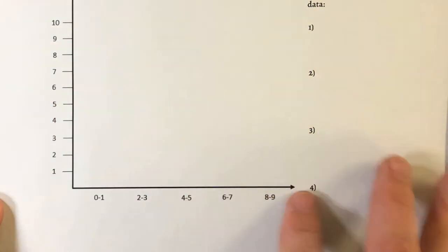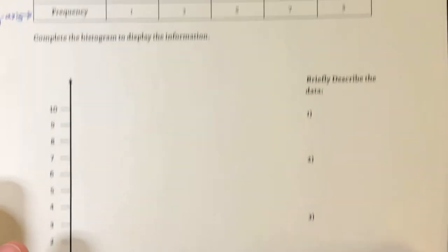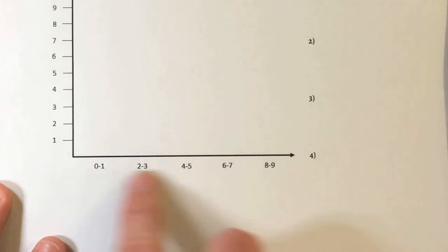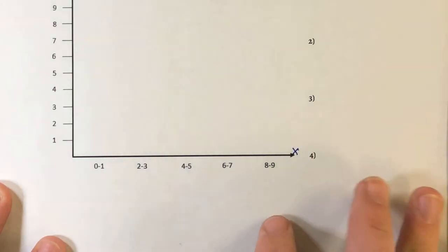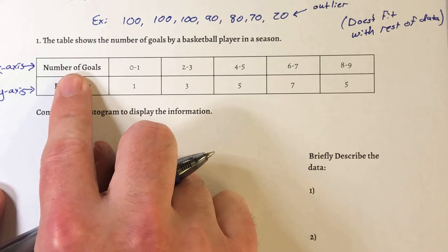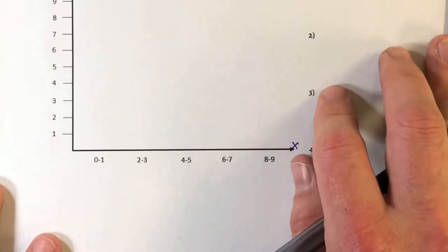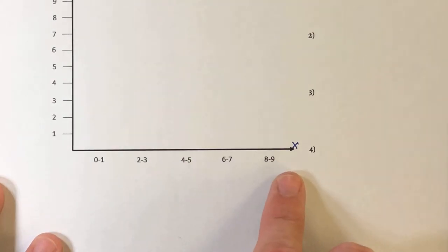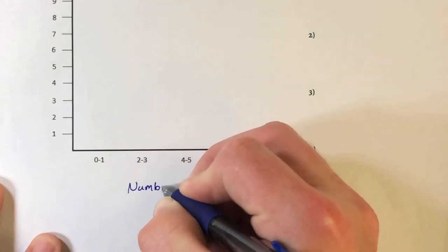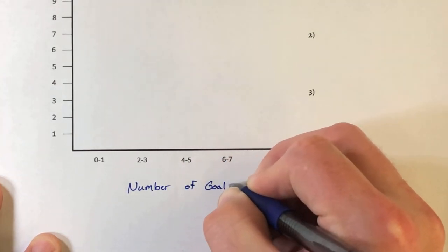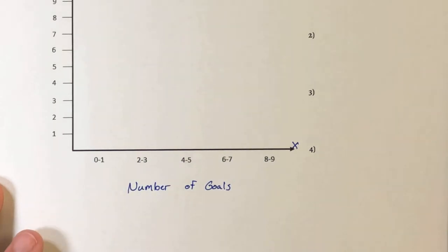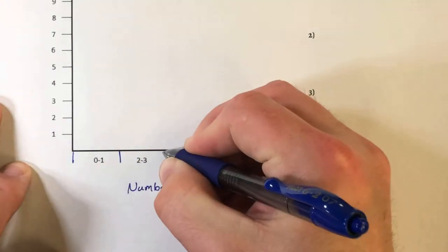I already have a pre-made template. You'll notice that our range of goals from zero to nine has already been divided up into equal intervals — this is our x-axis. I need a title. You can typically use what is written in your chart as your titles. It just needs to match what these numbers represent. So 'number of goals' is going to be our x-axis label, and we'll also use it as our title. We made zero to one, two to three, four to five, six to seven, or eight to nine goals. We're also going to split these up.